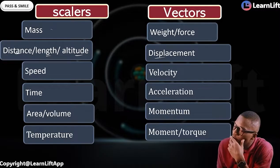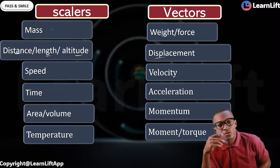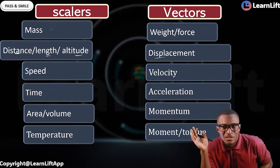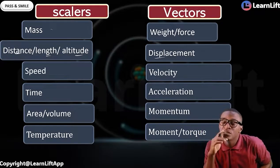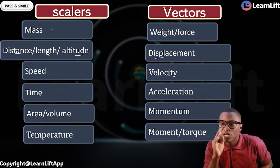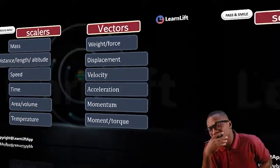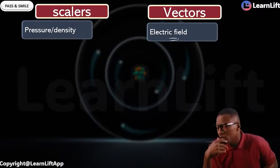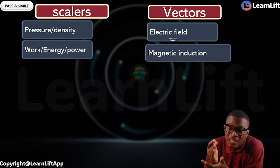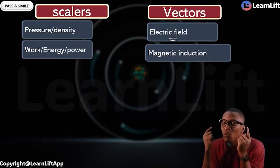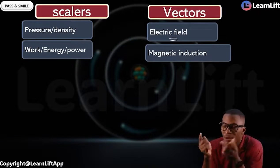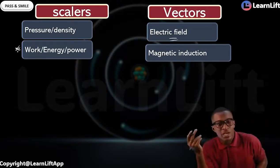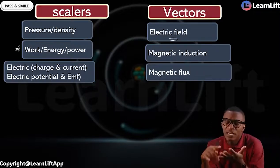Take note: momentum, moment, and torque are vectors; acceleration, velocity, displacement, weight, and force are vectors. Work, energy, and power — remember this — all of them are scalars. This is a constant past question: work, energy, and power are scalars. Also pressure, density, and electric field are scalars. Electric current, electric charge, EMF, and potential difference are all scalars.